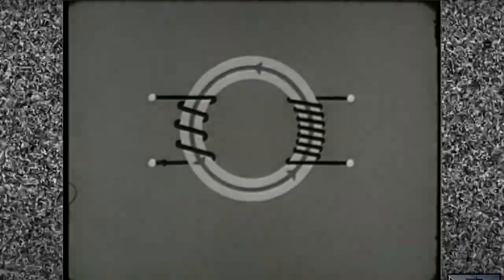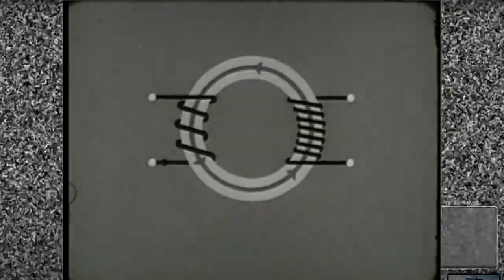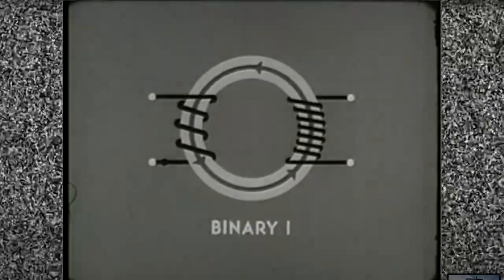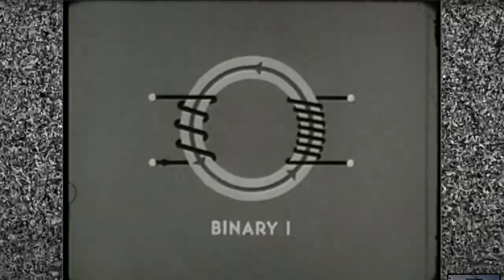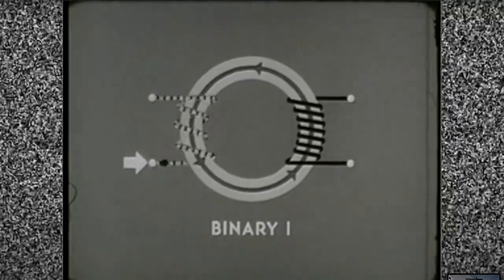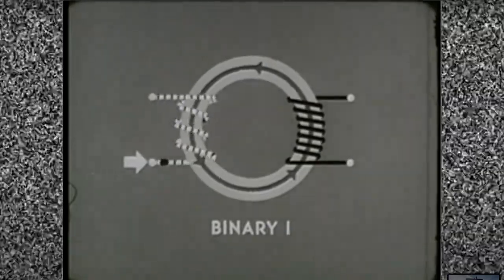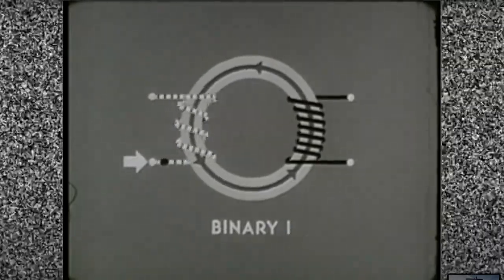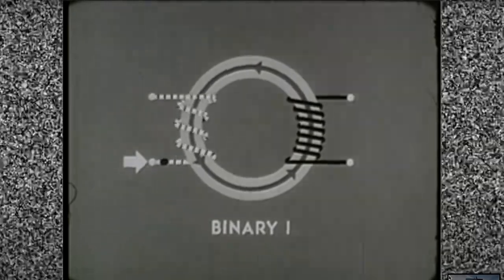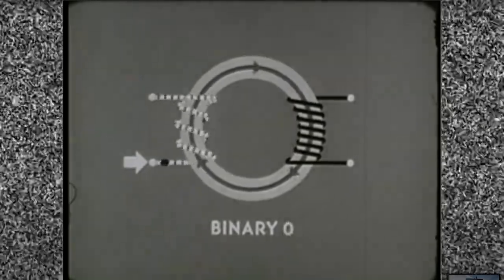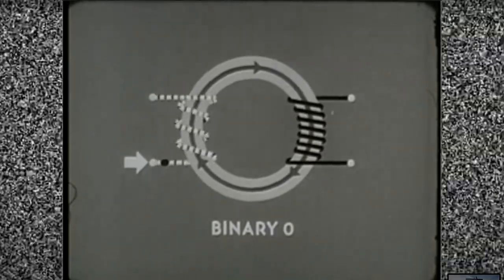Assume the core is in a state of positive residual magnetism. In the binary one state. To change the core to binary zero, we send current into the dot side of the input winding. Dot current switches the core to binary zero, reversing the direction of the magnetic lines of force.